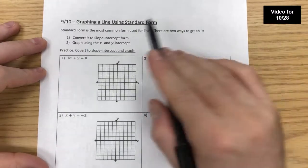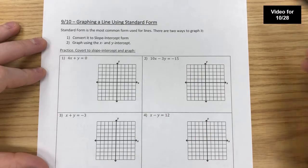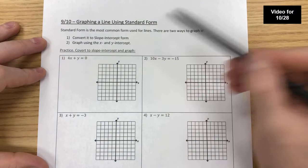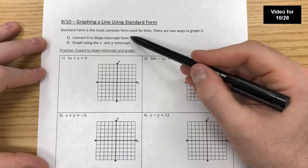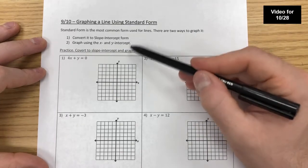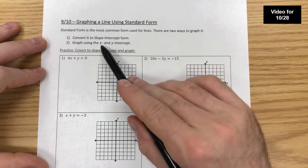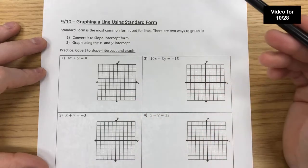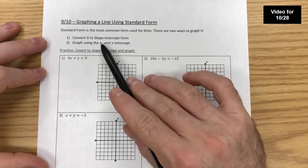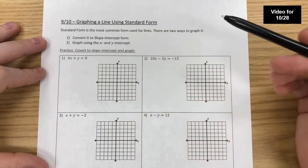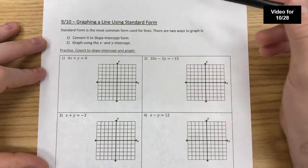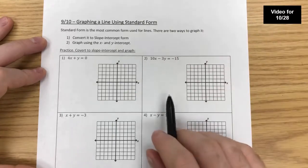Today we're going to be graphing a line using standard form. This is different from yesterday where we converted to slope-intercept form. Today we're graphing using the x and y intercepts. This doesn't mean we can't use slope-intercept — we can — but we're using intercepts because this method appears in quadratics and polynomials. X-intercepts and y-intercepts are important points on graphs, and since we're still dealing with lines, both methods work.